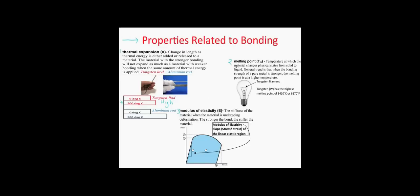Our next property is the melting point — the temperature at which the material changes physical states from solid to liquid. The general trend is that when the bonding strength of a pure metal is stronger, the melting point is at a higher temperature. As a fun fact, tungsten has the highest melting point and is used in light bulbs, as shown here.